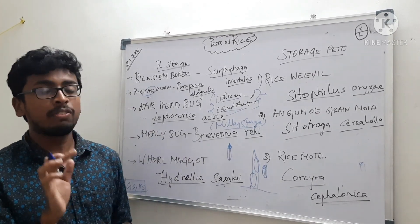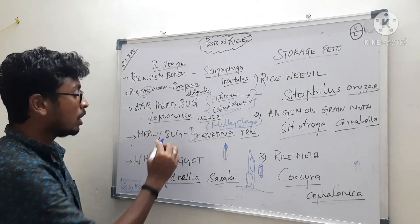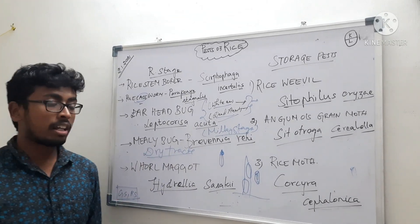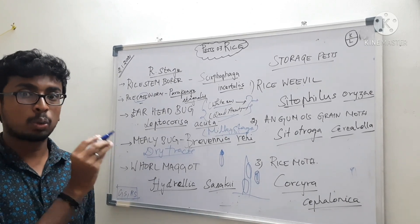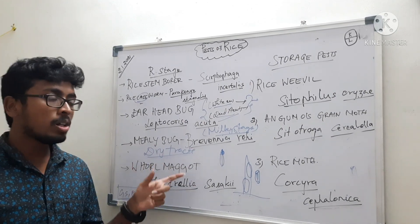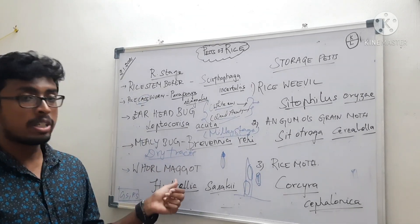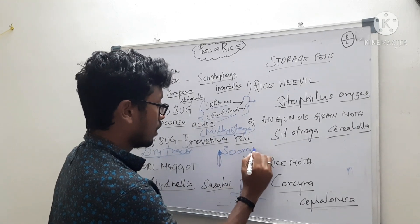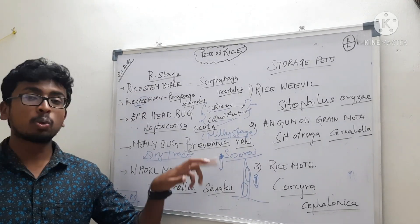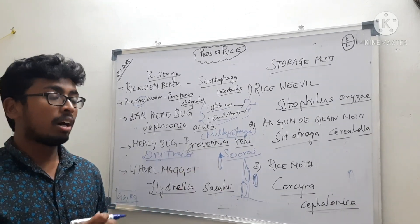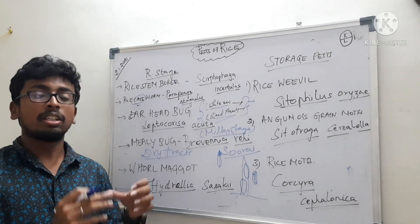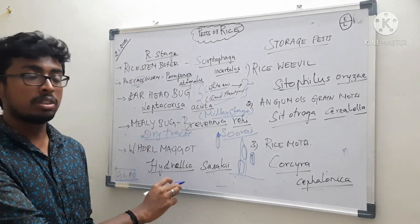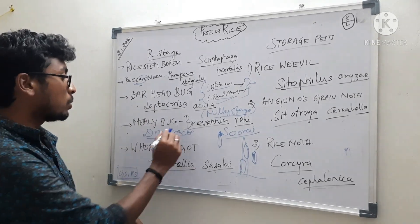Next is the mili bug. When mili bug comes to mind, you should know it is only present in the dry tracts of Tamil Nadu — areas like Ramanathapuram and parts of Thoothukudi. This pest is associated with frequent drought conditions. It causes a disease called Suray disease, where the emerging panicle does not come out and the plant just remains as it is, which is a major problem in drought conditions in the dry tracts of Tamil Nadu.